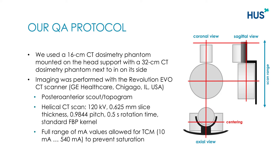We use the head and the body CT dosimeter phantoms in the scan. The head phantom was mounted on the head support of the patient table and the body phantom was placed next to the head phantom on its side. The phantoms were centered as shown in the figure here.